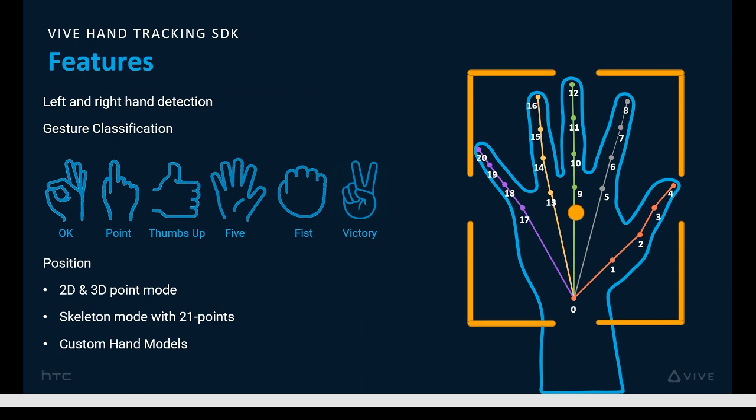Our Vive hand tracking solution, like others, is a deep learning-based solution. It can track both hands simultaneously, distinguishing the left and right hands, and concurrently recognize up to six predefined gestures. Recently, we added the ability to use a pinch gesture. The hand tracking engine can provide hand positions in both 2D and 3D point modes. And there's the skeleton mode, which is finger-level 3D positional tracking consisting of 21 points on each hand — four per finger and one for the palm. The 21-point skeleton can be mapped to a custom hand model, of which we provide a couple of examples.